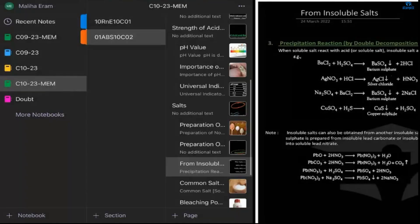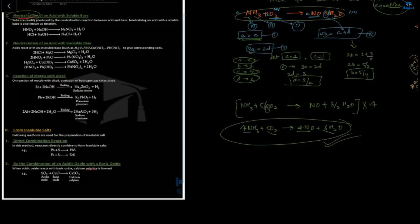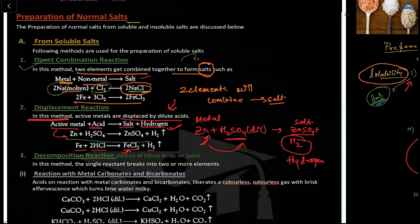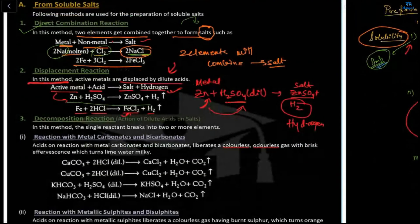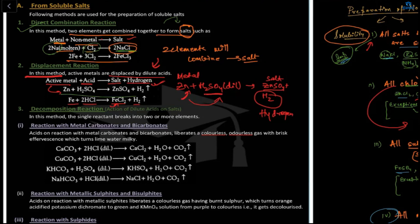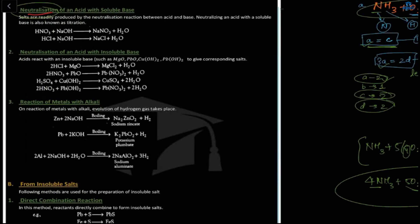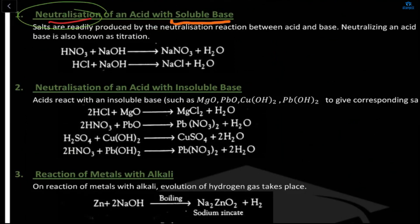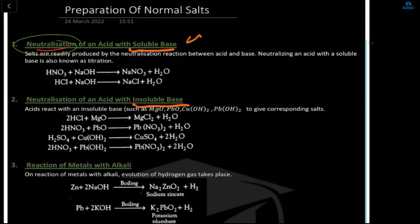In the last class, we discussed the preparation of normal salts, including neutralization reactions and direct combination — combining two elements to form a salt. We also covered displacement reactions where an active metal plus acid gives a salt and hydrogen. Neutralization reactions are of two types: neutralization of an acid with a soluble base, and neutralization of an acid with an insoluble base.